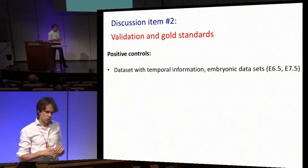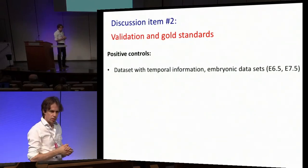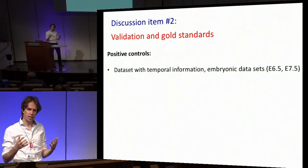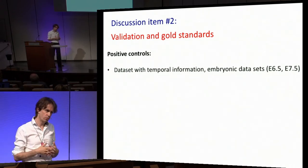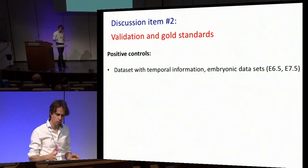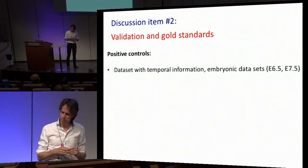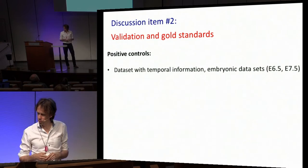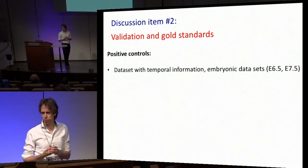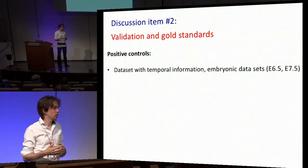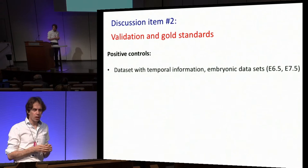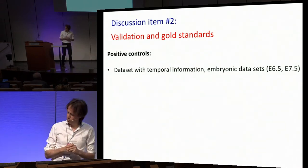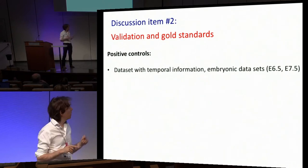The other item that was very lively discussed — the major topic — was how do you validate all these beautiful algorithms: Monocle, Wanderlust, STEMID. How are you sure they are at all reflective of what's happening biologically? Are there any gold standards? We had a lot of positive controls, and I forgot my slide on the negative control, which is probably the more interesting one.